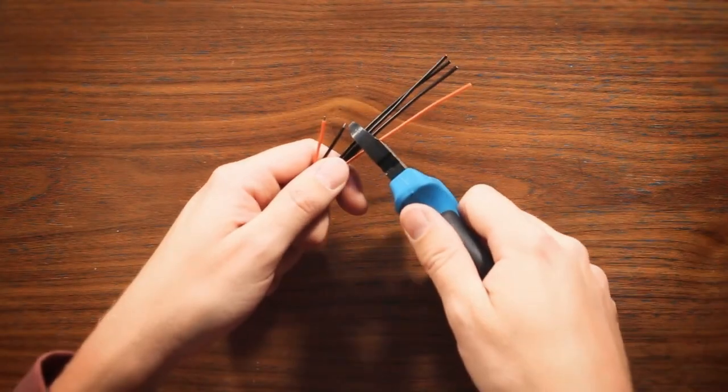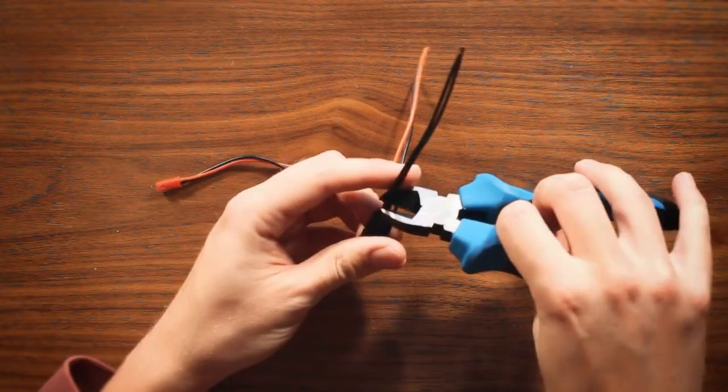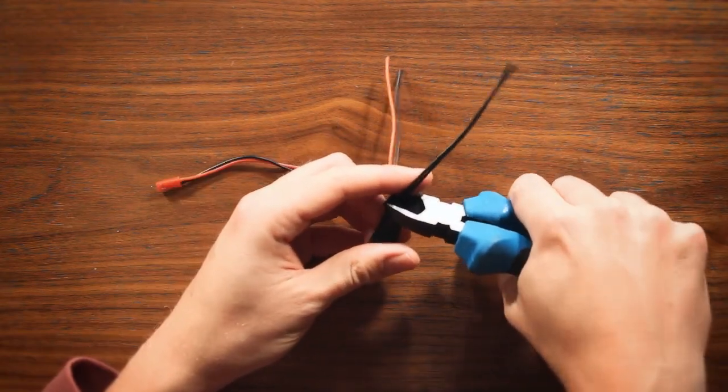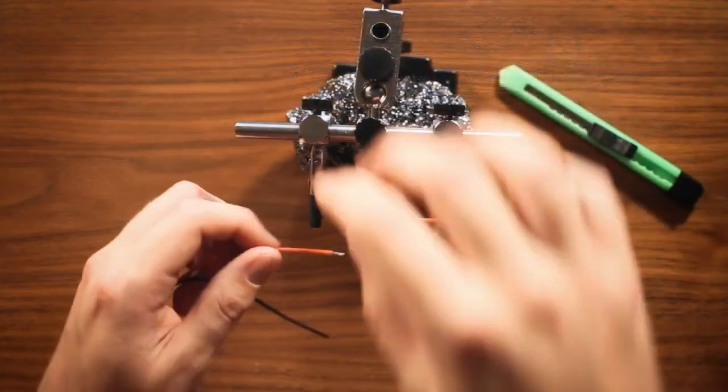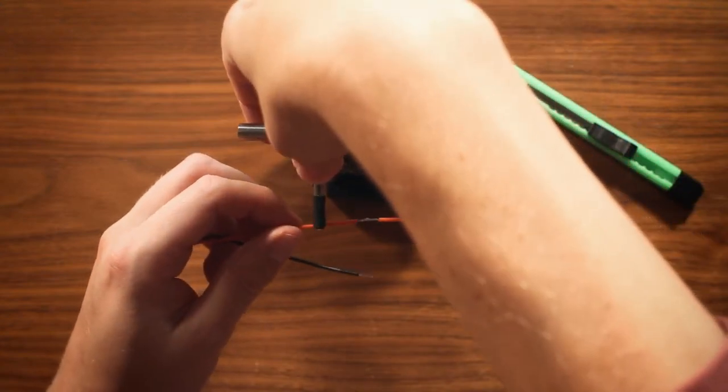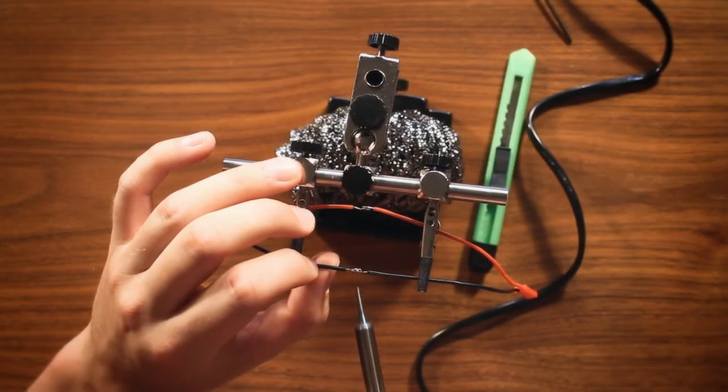As for how to power the gimbal I considered a couple of different solutions, like using a separate battery – though this would add additional weight and bulk to the setup – or soldering a lead to some connection point on the quadcopter's flight board – though this would require taking the quadcopter apart.